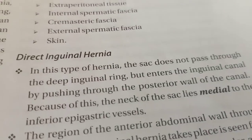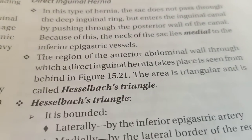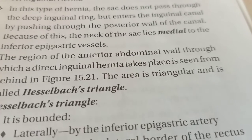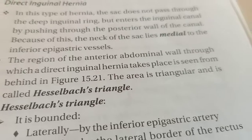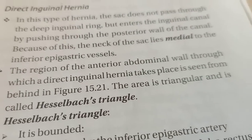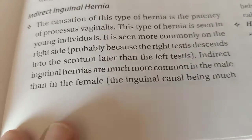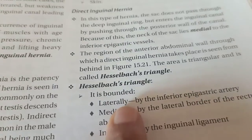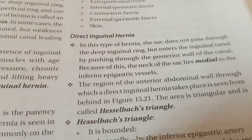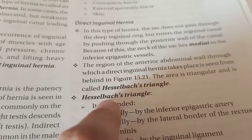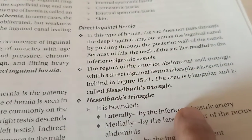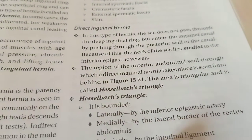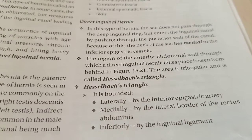Now we will take direct inguinal hernia. The region of the anterior abdominal wall through which direct inguinal hernia takes place, seen from behind, is known as Hesselbach's triangle. In indirect inguinal hernia the reason is patency of the processus vaginalis, whereas in direct inguinal hernia, there is a triangular area from which abdominal contents can come out — Hesselbach's triangle.